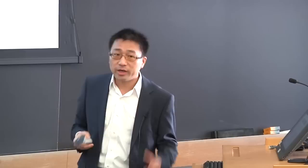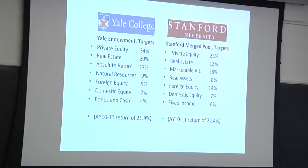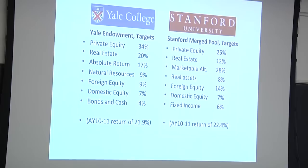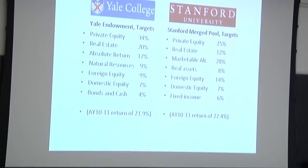Just to get everybody on board, these are two endowment funds, and this is the allocation. Obviously, you can see that the private equity allocation is huge. About a third for Yale, and about a quarter for Stanford. If you look down at the other asset classes, you also notice that alternative investments carry an enormous amount of weight in the allocation. So clearly, private equity is important.